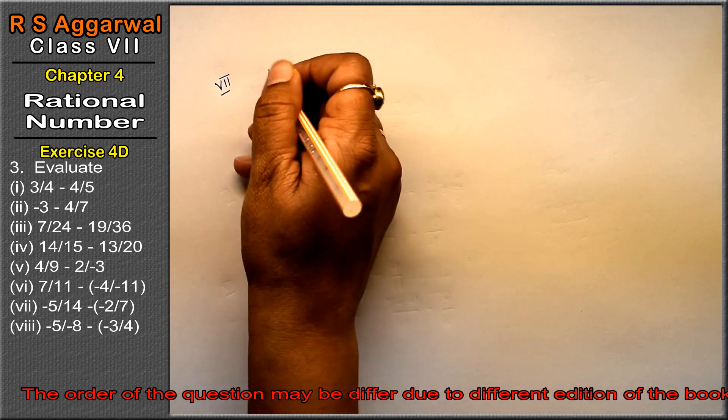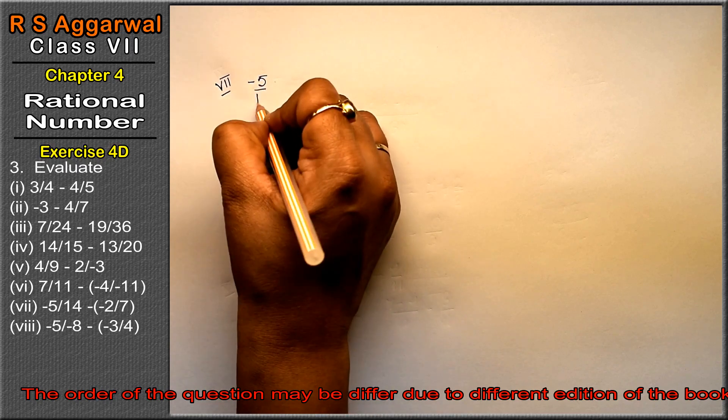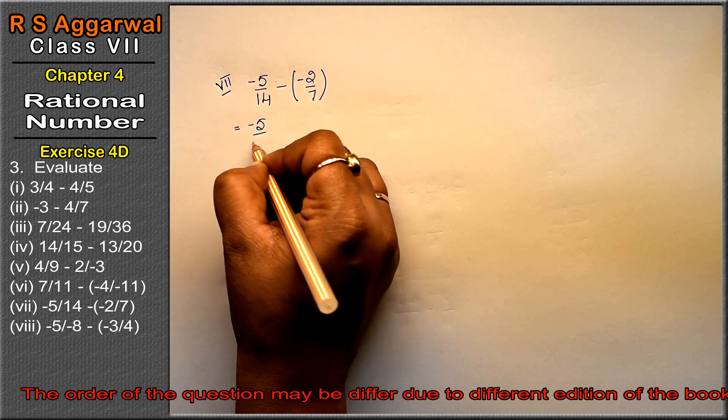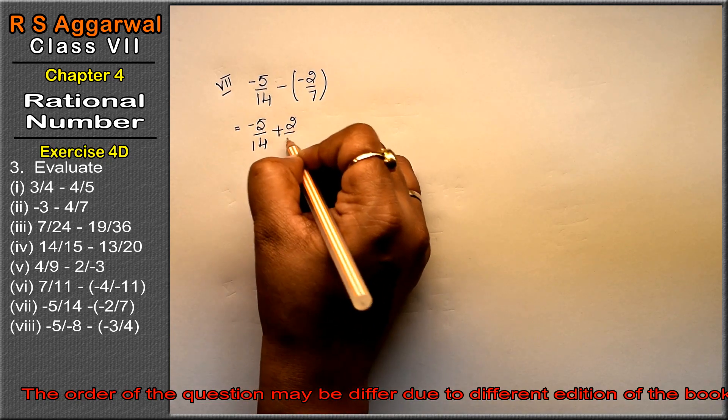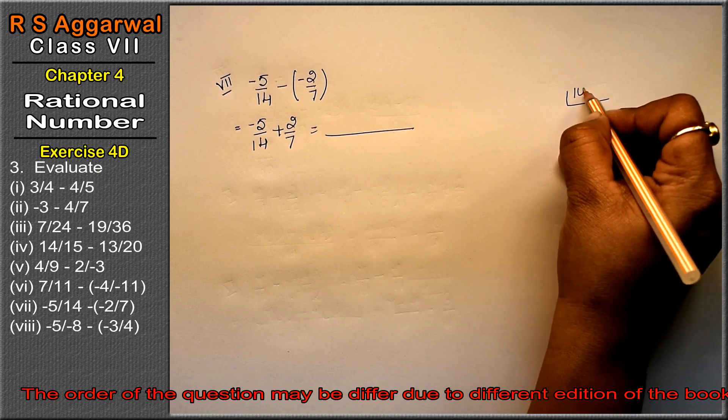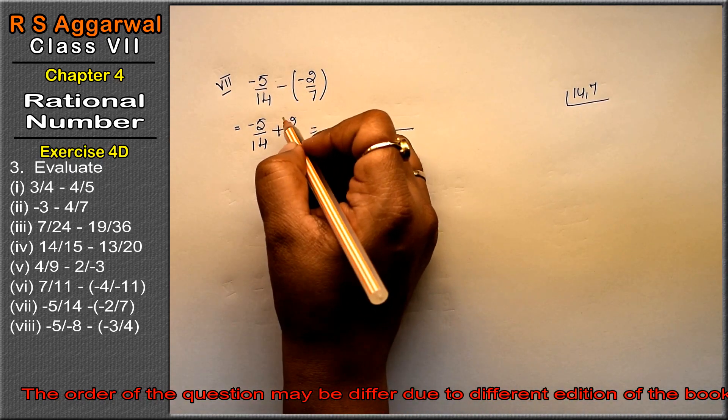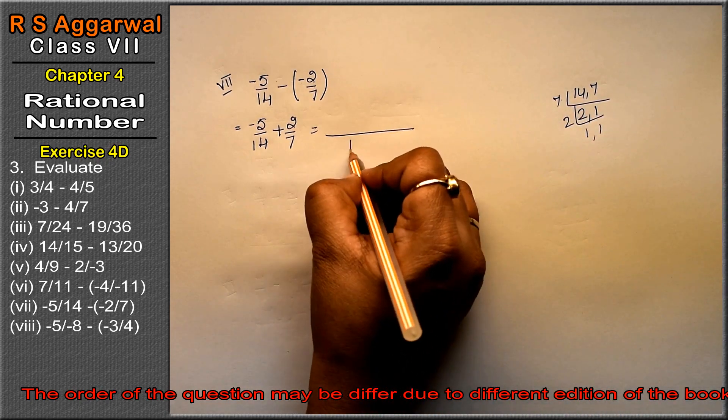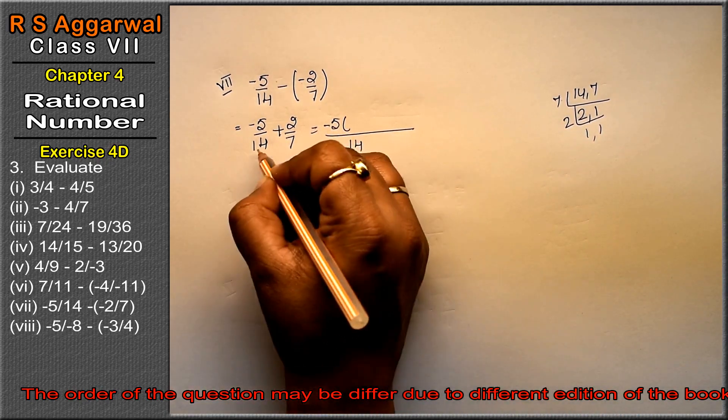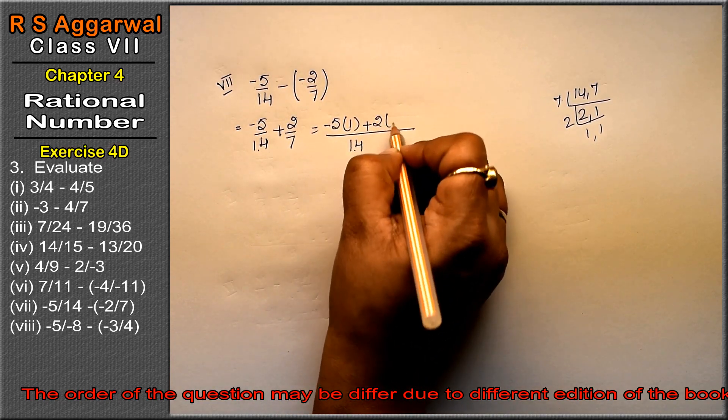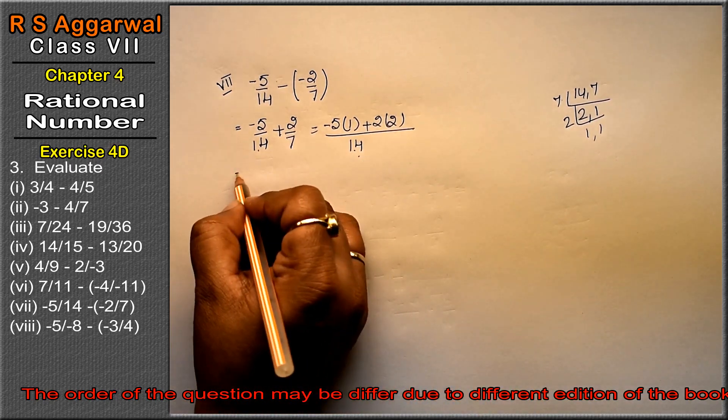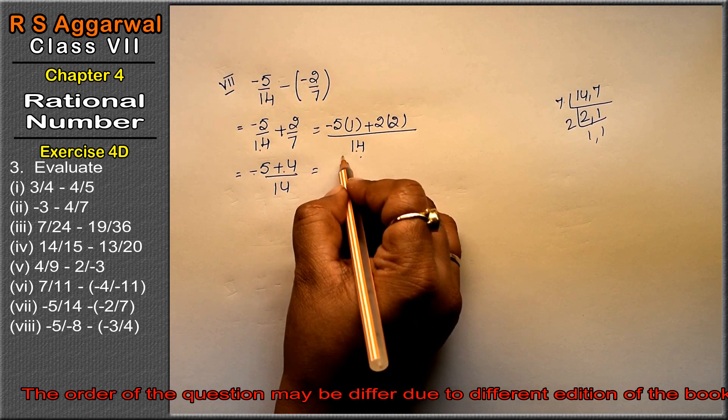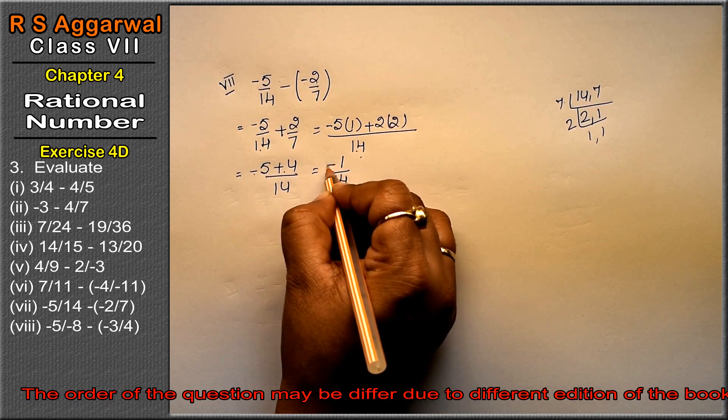Seventh part is minus 5 upon 14 minus bracket minus 2 upon 7. When we open the bracket, it becomes minus 5 upon 14 plus 2 upon 7. Whenever two signs come together, please solve using brackets. LCM of 14 and 7: 7 times 2 is 14. So minus 5 times 1 is minus 5, plus 2 times 2 is 4, upon 14. Opposite signs subtract: 5 minus 4 is 1. Sign of the greater value gives us minus 1 upon 14 as the answer.